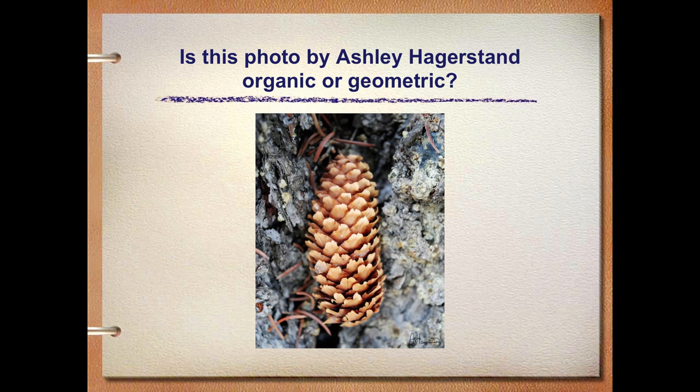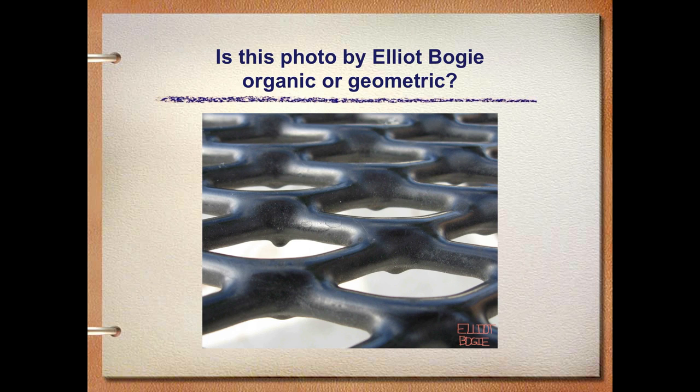In this photo by Ashley, think about whether it's organic or geometric. I see it as being organic, because the shapes within the pinecone are not perfect shapes that we would find in math class — they have jagged edges and rough trims. In this photo by Elliot, we see it as definitely being geometric. The shapes are squares or diamonds depending on how you look at it. But it could be argued that it is organic, because the way the plastic has melted over the metal it has left little droplets at the bottom, and those droplets create a different sort of shape in those diamonds, making them kind of an irregular or more organic shape.